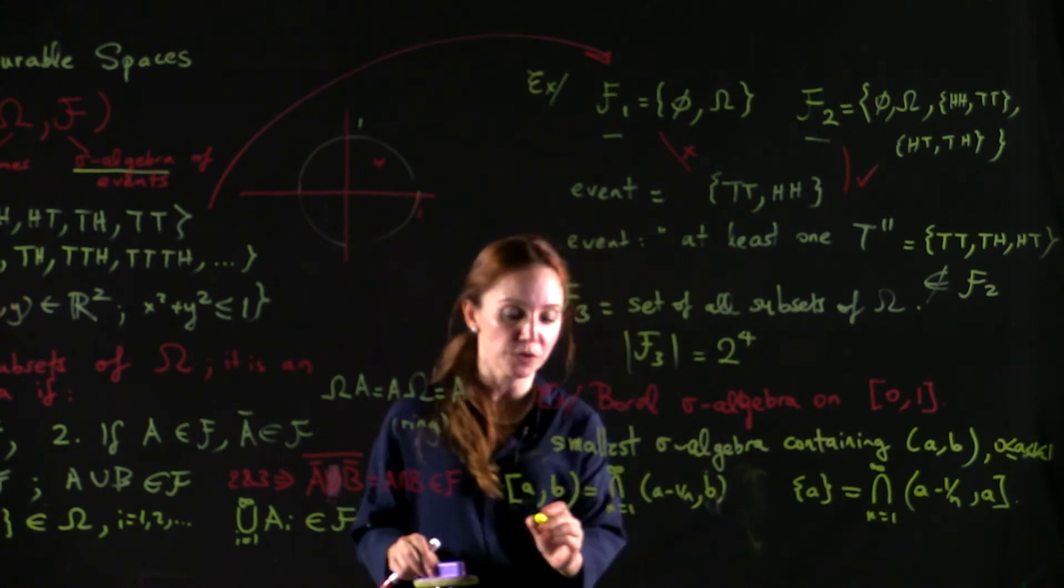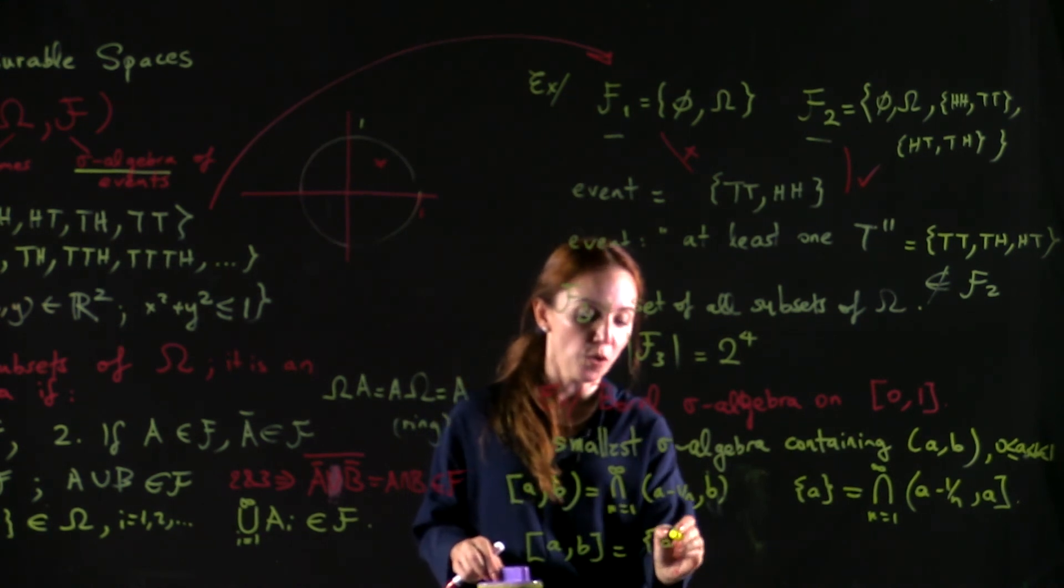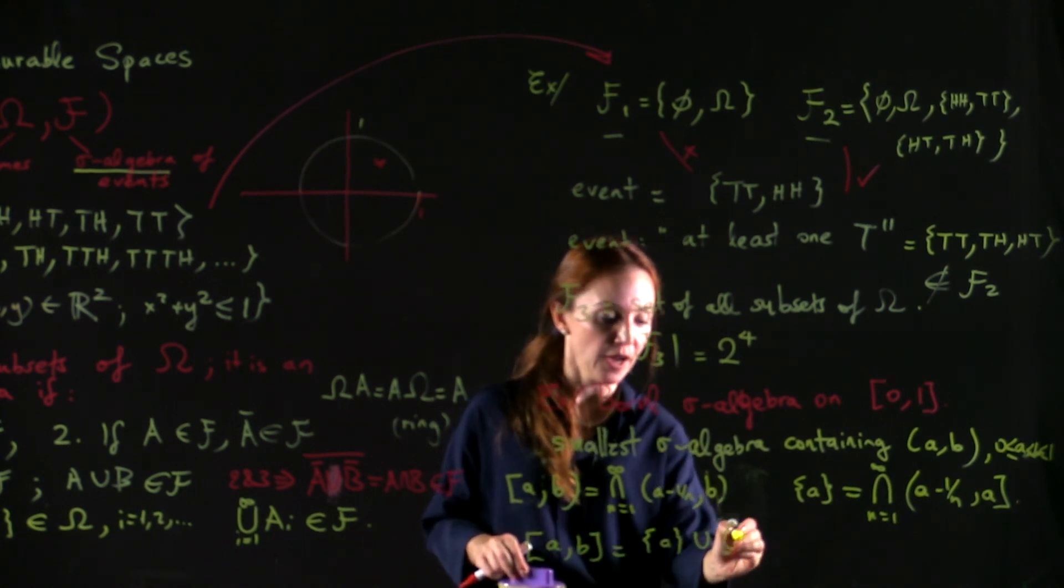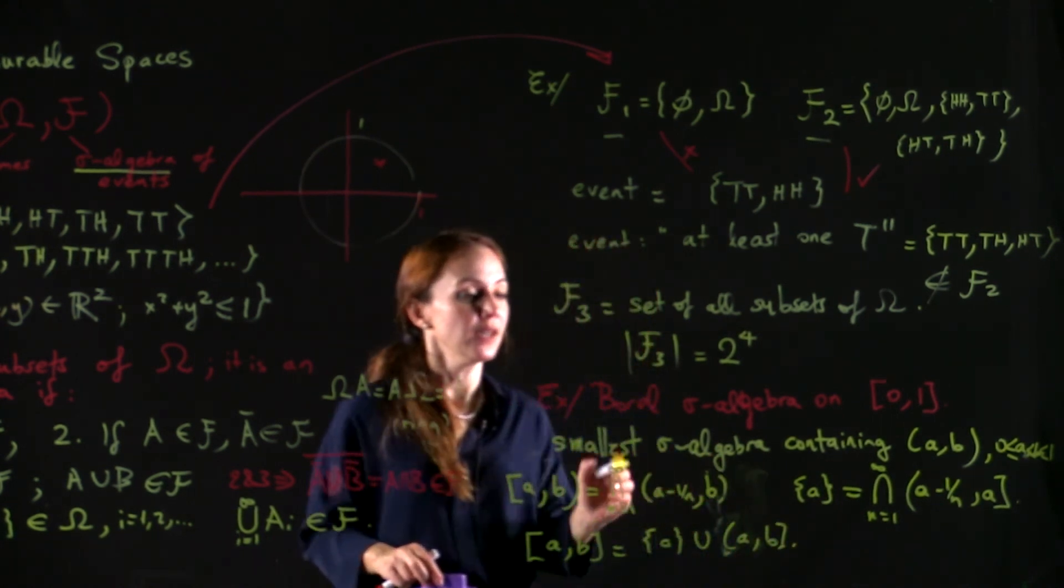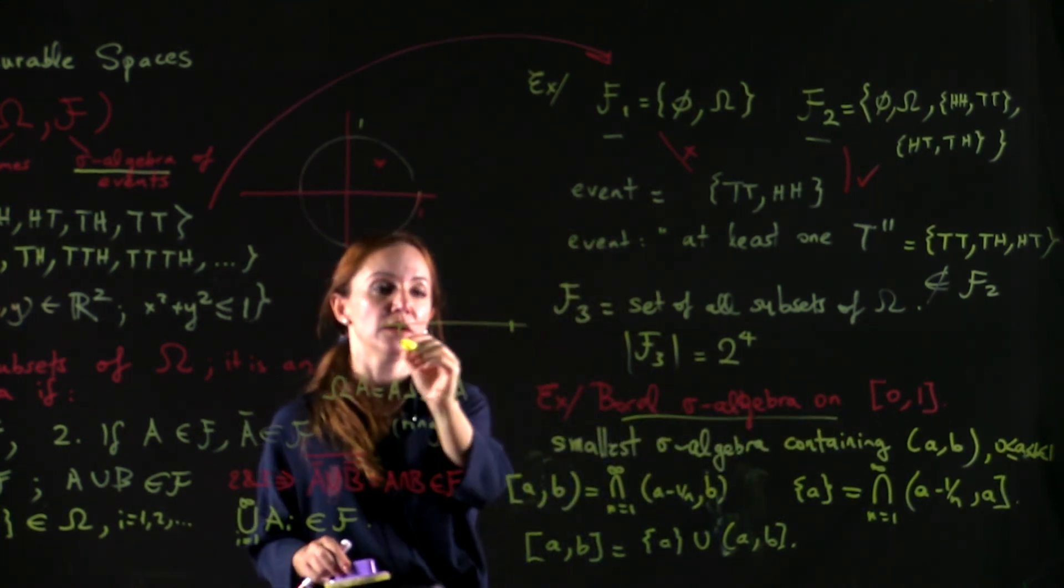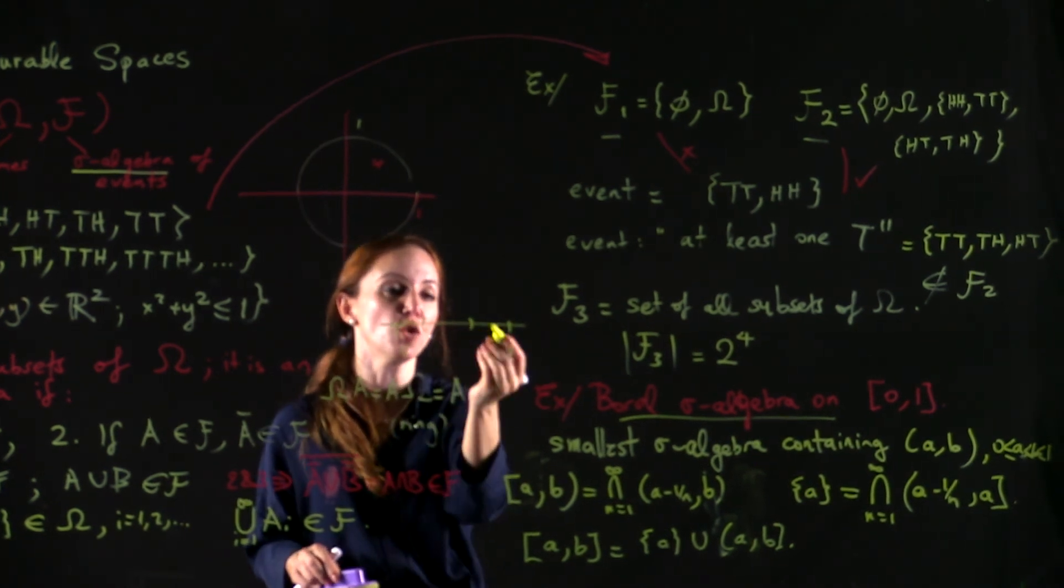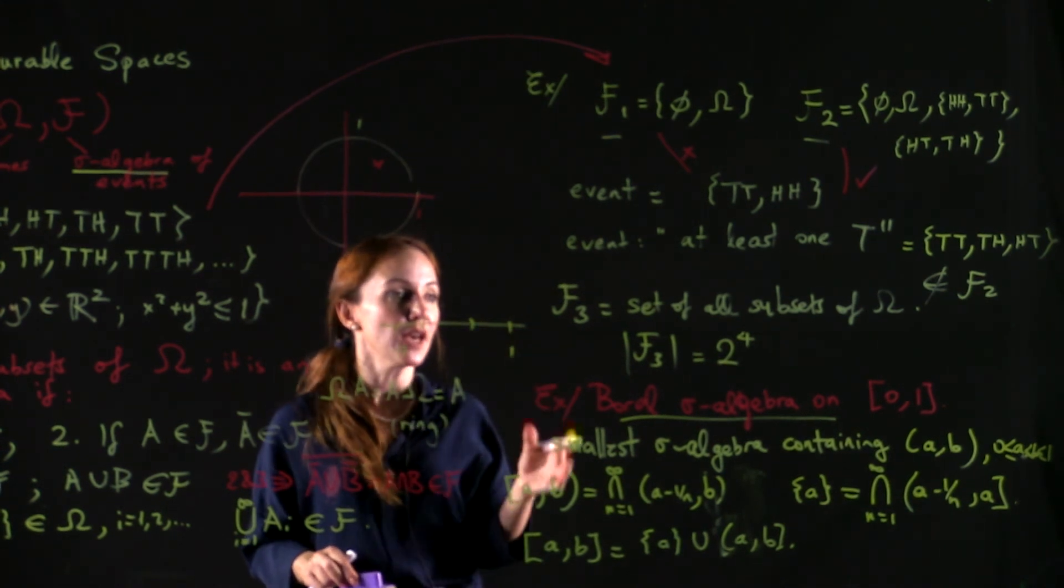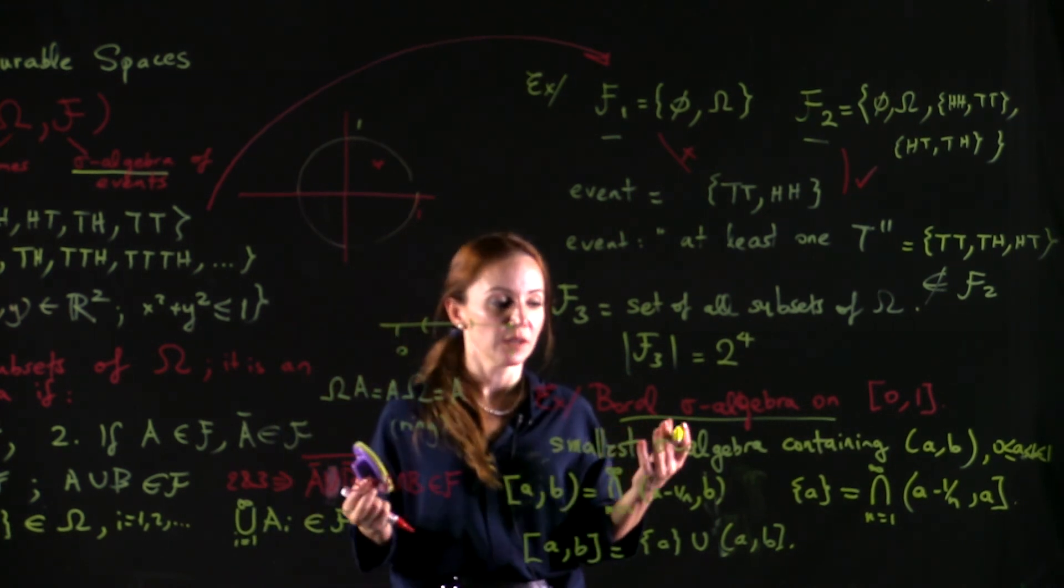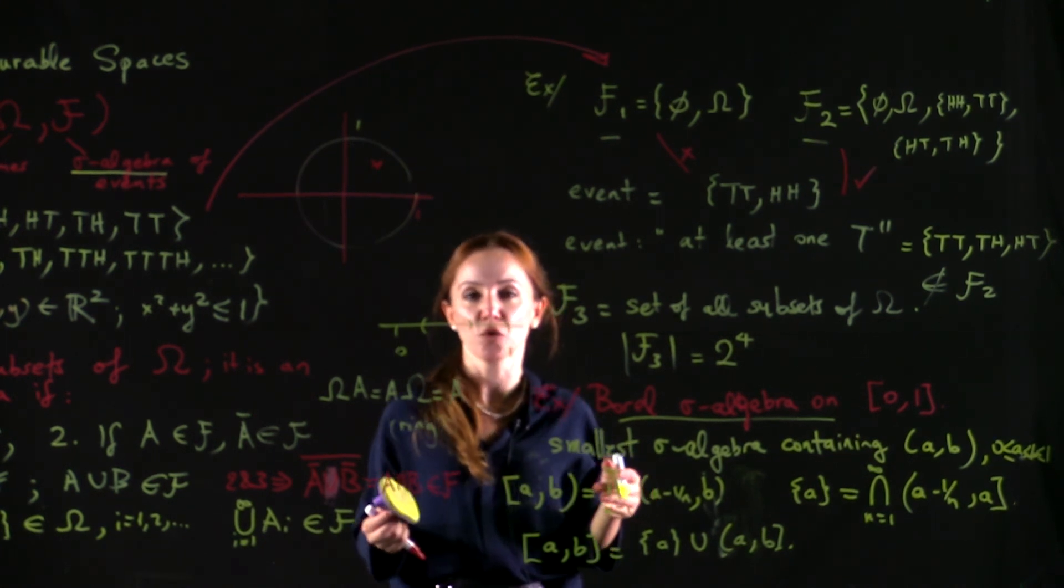And then you can obtain a closed interval by combining a point with a half open interval. So basically, the Borel sigma algebra on 0 to 1 contains all intervals, half open, half closed, all points, all countable unions of intervals. And it is, for practical purposes, enough detail to measure events of interest.